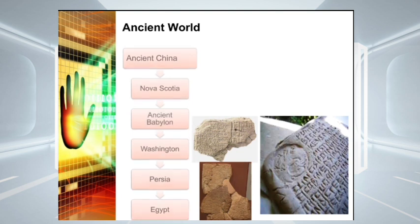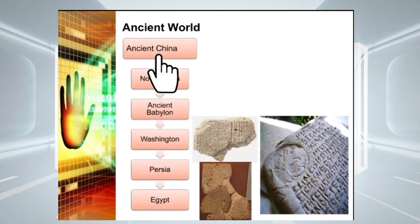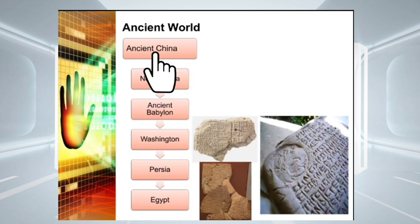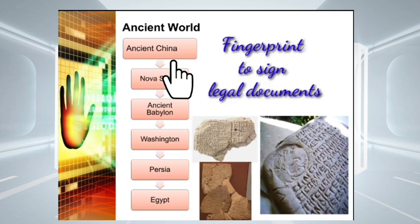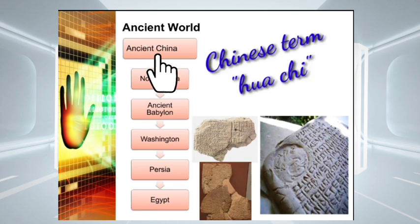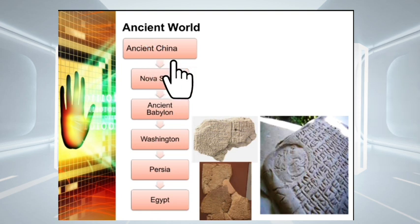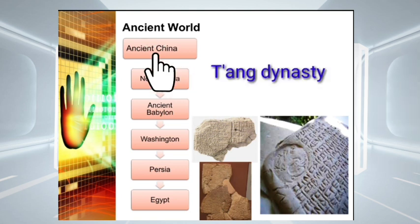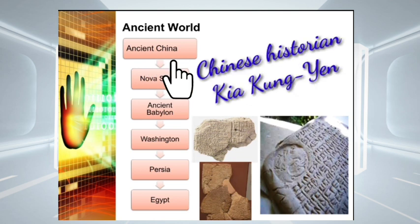First, in the ancient world, in ancient China, evidence exists that there is documented fingerprint use way back 3,000 years ago to sign legal documents, wherein thumbprints were found on clay seals, and fingerprint is called huaqi in China. Also, Chinese legal documents or business contracts were identified with the Tang dynasty. Kia Yong-yen, who is a Chinese historian and author during this time,